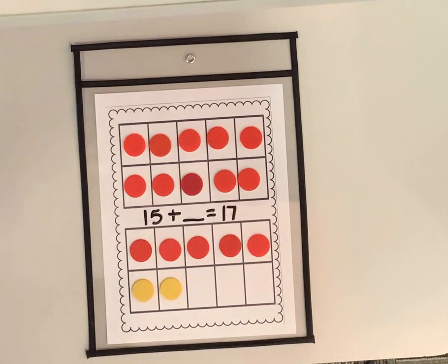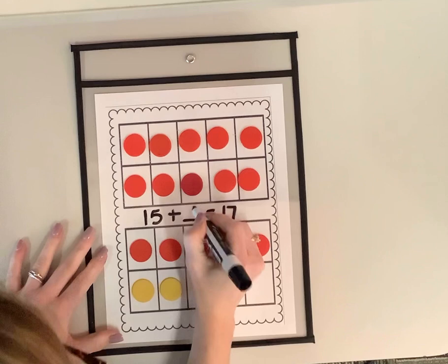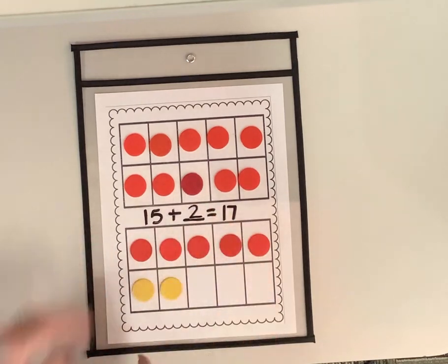What's my missing number? Two. You're so right. 15 plus two equals 17.